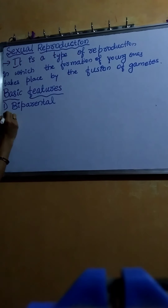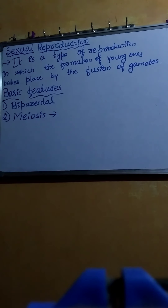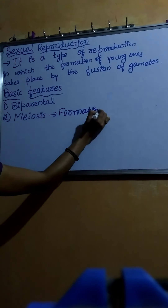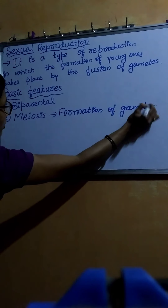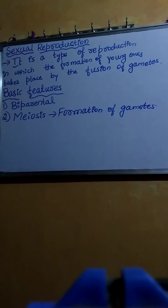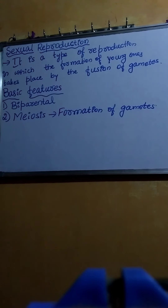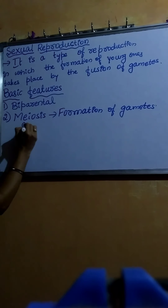Formation of gametes takes place by meiosis type of cell division — formation of male and female gametes. Meiosis is a reductional cell division where the diploid sex cells produce haploid gametes. For example, in case of males, the diploid sex cells present in the testis produce haploid sperm.